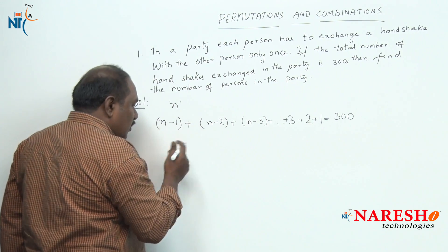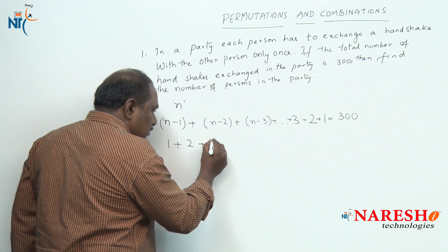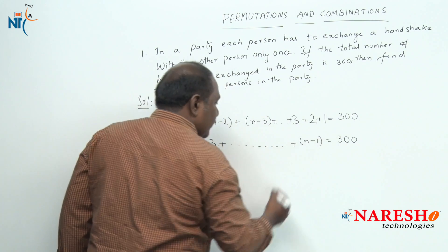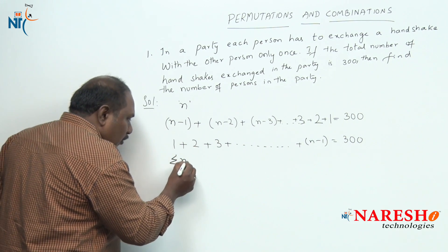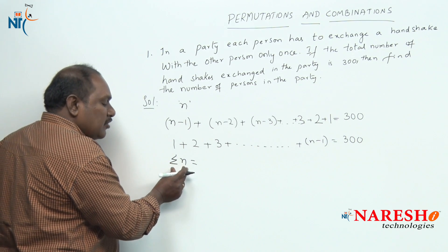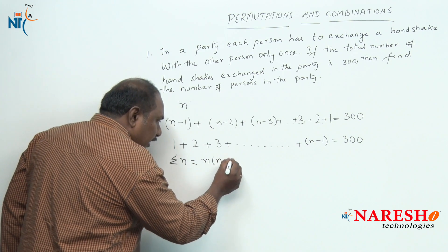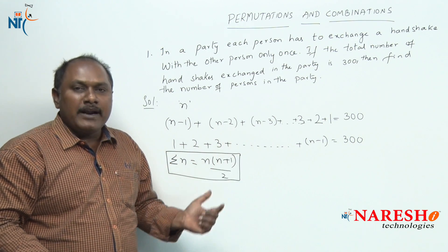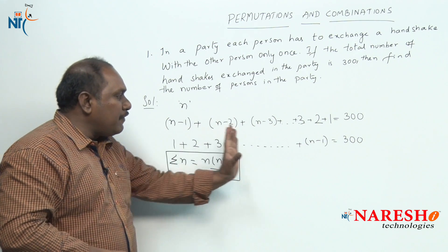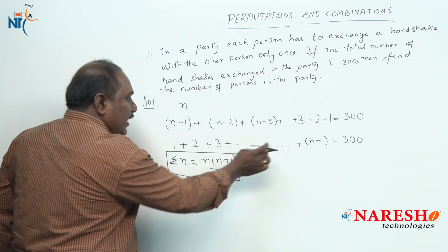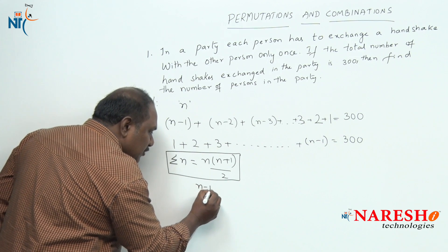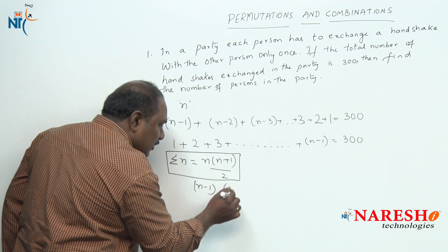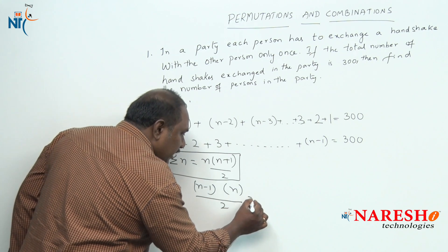Writing this expression in reverse order: 1 + 2 + 3 + ... + (n-1) = 300. The formula for the sum of the first n natural numbers is sigma n = n(n+1)/2. In our expression we have the sum of the first (n-1) natural numbers, so substituting (n-1) for n: (n-1) × n / 2 = 300.